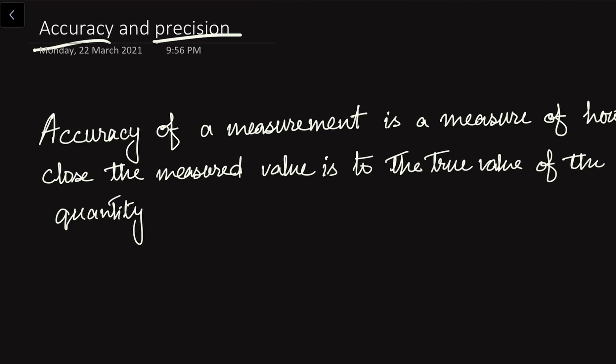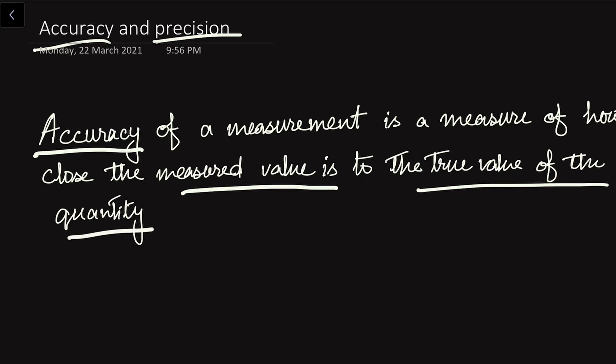First of all, let us see the definition of Accuracy. Accuracy of measurement is the measure of how close the measured value is to the true value of the quantity.